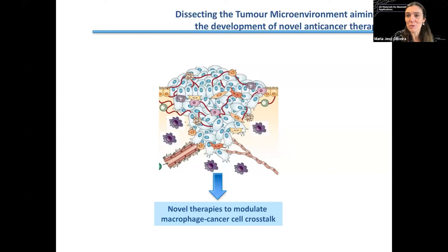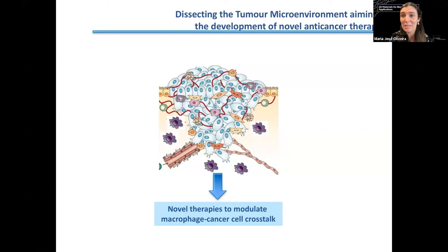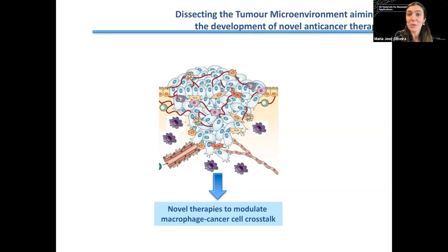In my group at I3S, we are very interested in the tumor microenvironment. The tumor is not only formed by cancer cells but also by extracellular components, bone marrow-derived cells, endothelial cells, fibroblasts, and many immune cells co-inhabiting with cancer cells at primary and metastatic sites. These cells are being modulated by cancer cells but are also modulating cancer cell activity. From this crosstalk, tumors may escape immune control and progress, affecting metastases and patient survival.